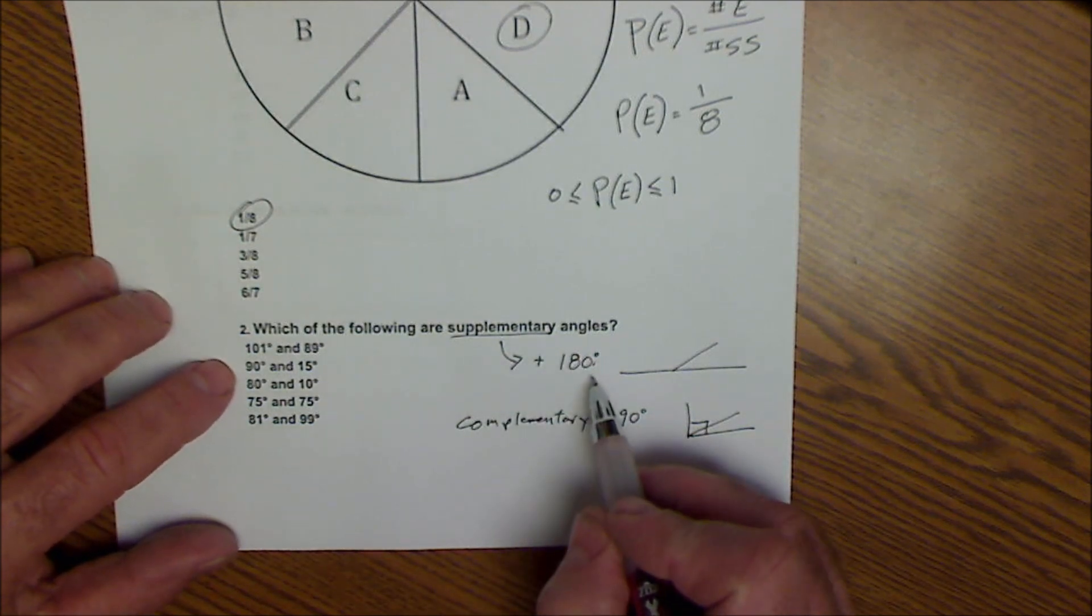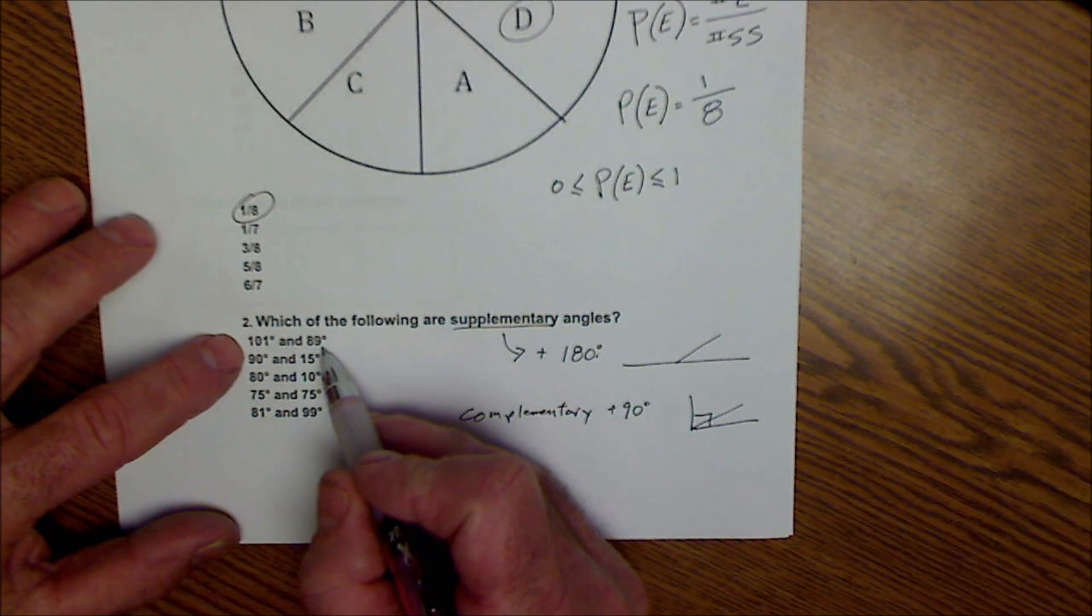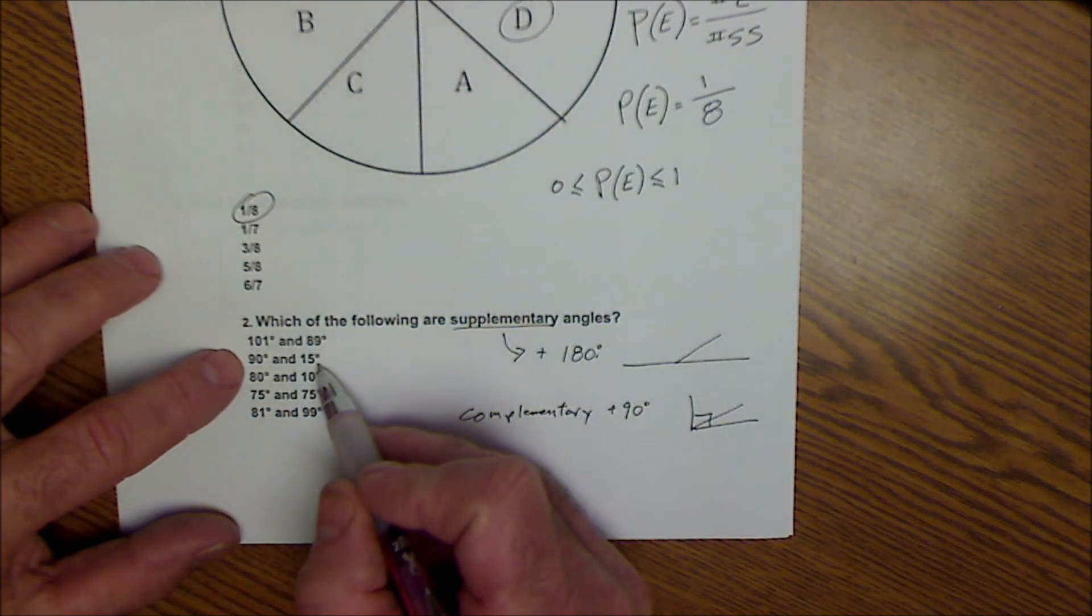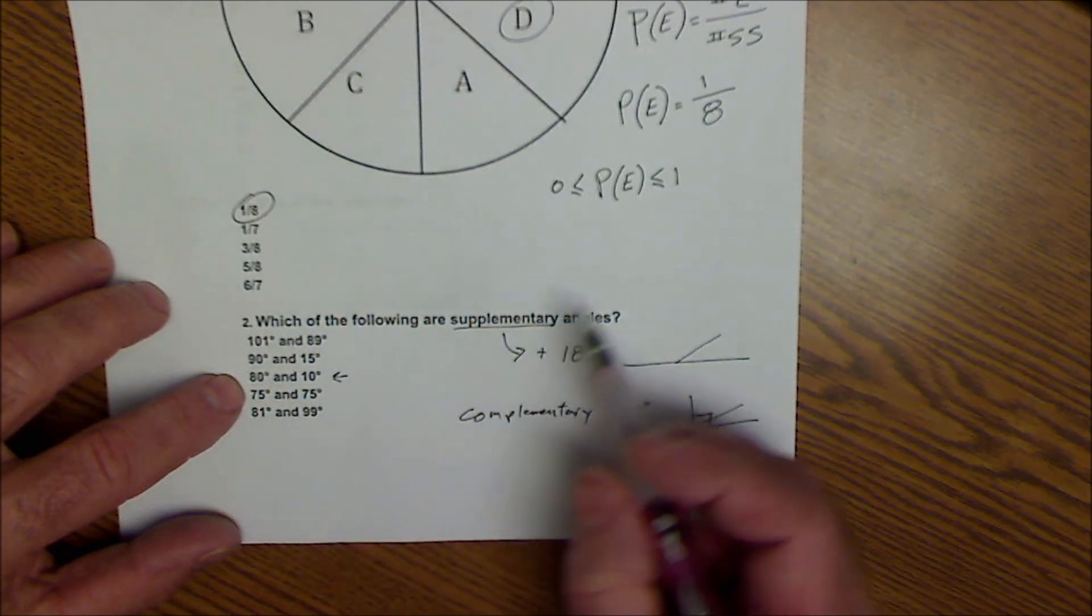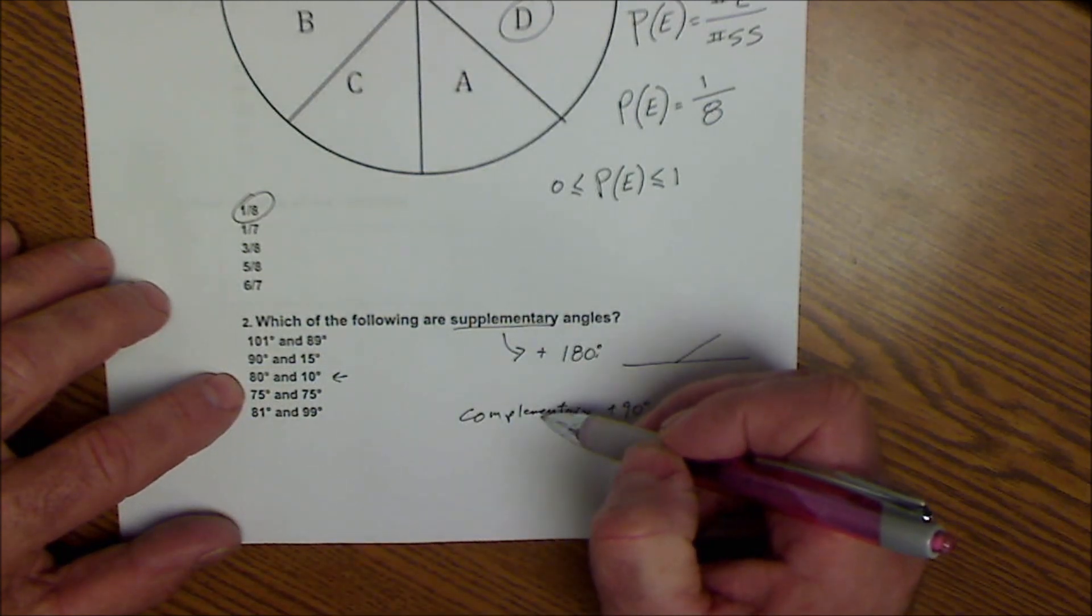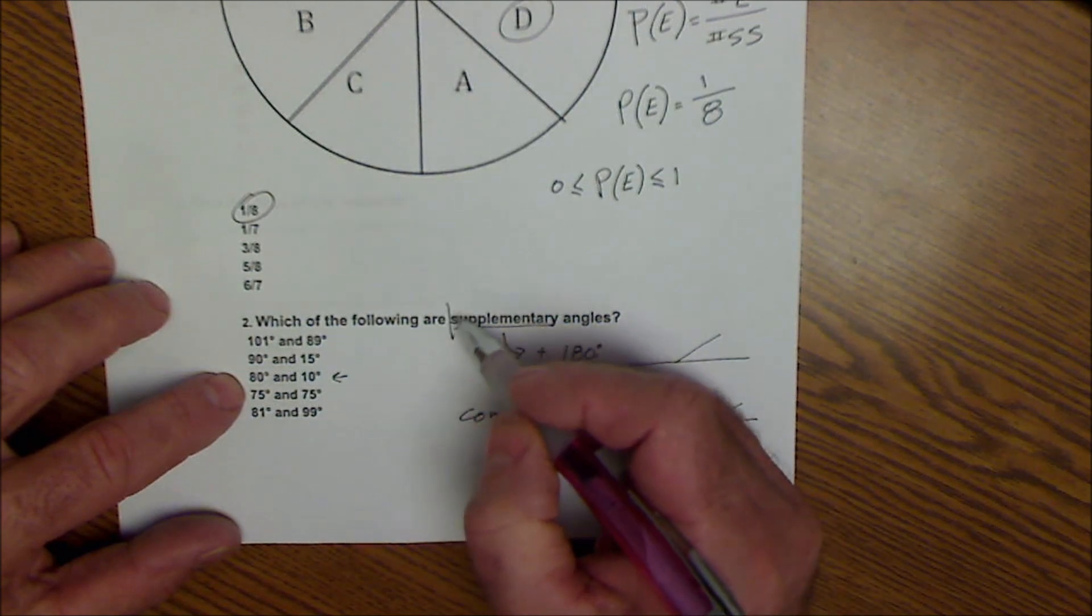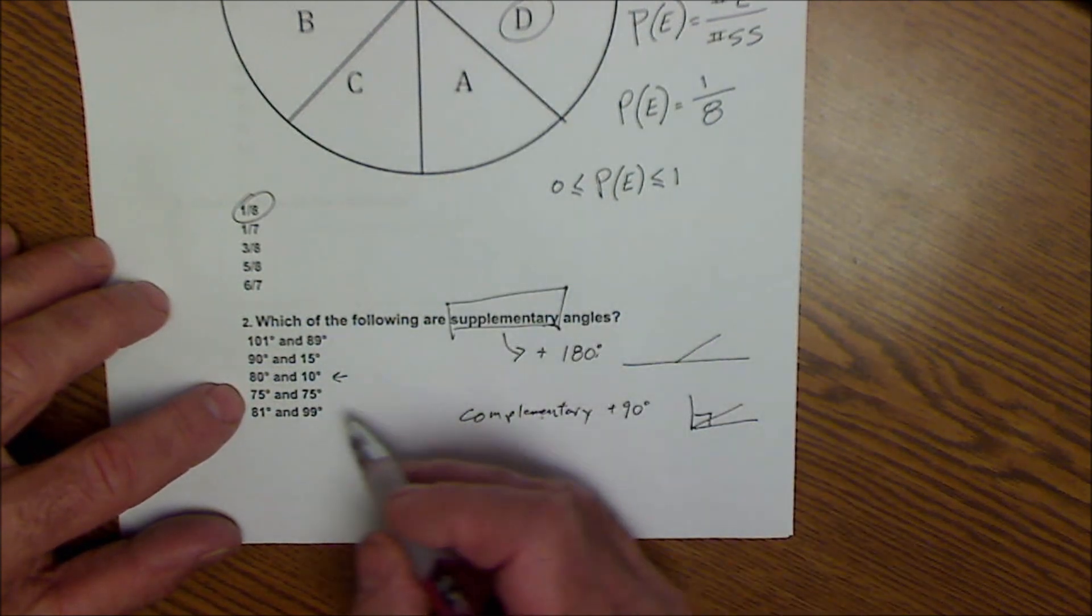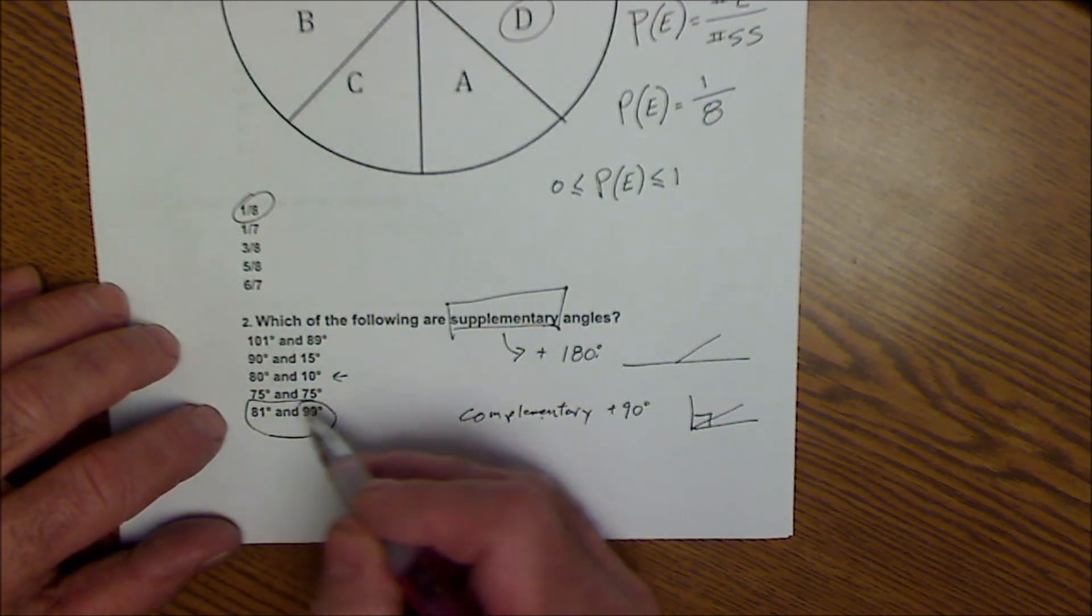So which two angles add up to 180 degrees? That's a little bit of a distractor, but this is 190, so that's not it. 105, that's not it. This is also a distractor to see if you know the difference between supplementary and complementary. 80 and 10 is complementary, but we're looking for supplementary angles. 150, and then these two do actually add up to 180, so that is our correct answer.